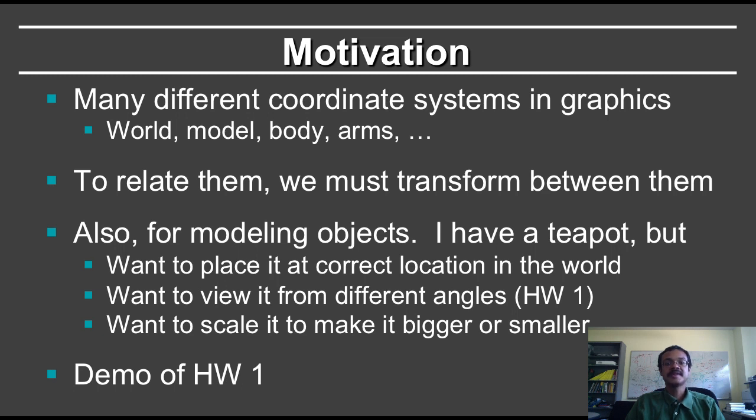you may have one coordinate system for the character in the world, and within that you may have different coordinate systems for the body, for the arms. To relate them, we must transform between them.